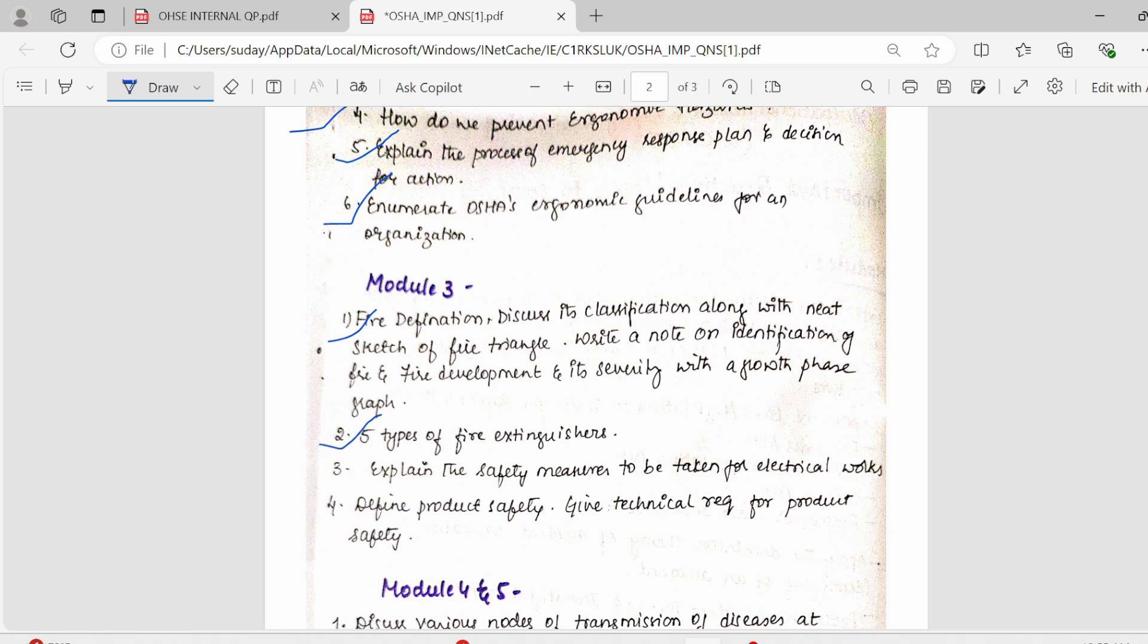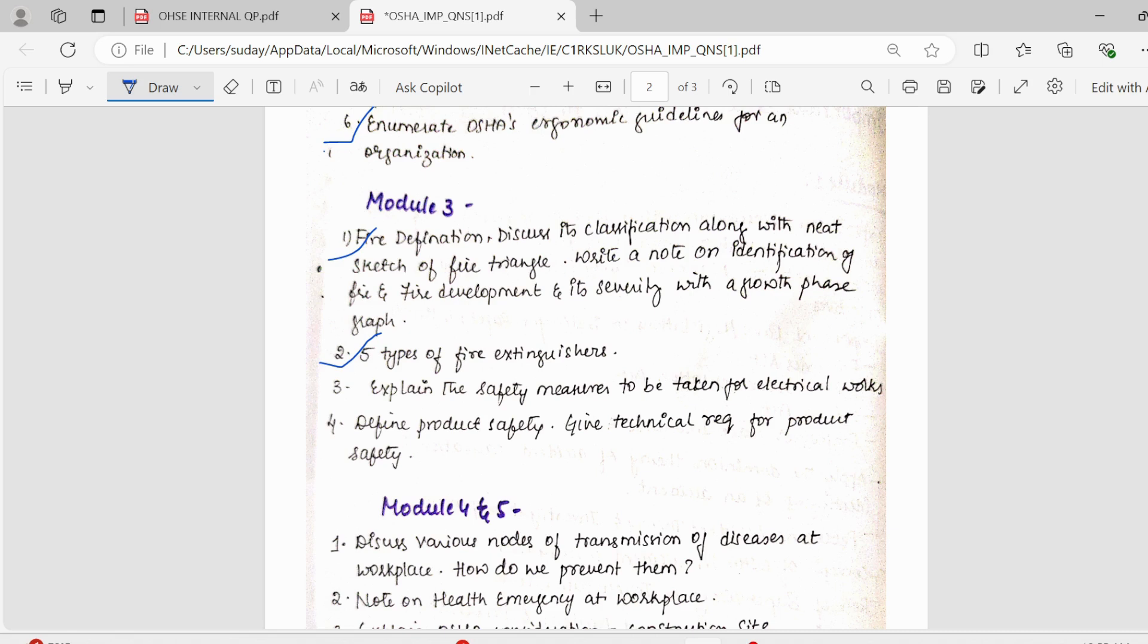Next, important we have is five types of fire extinguishers. It is a pretty standard question. And if you are opting to write this answer, make sure you know about each and every fire extinguisher properly. Because you can't write all the specifications, what is it composed of, the diagram and labeling should be done properly. Next, moving on further, safety measures to be taken for electric works. In third module, we have two topics. Either it is fire or it is electrical.